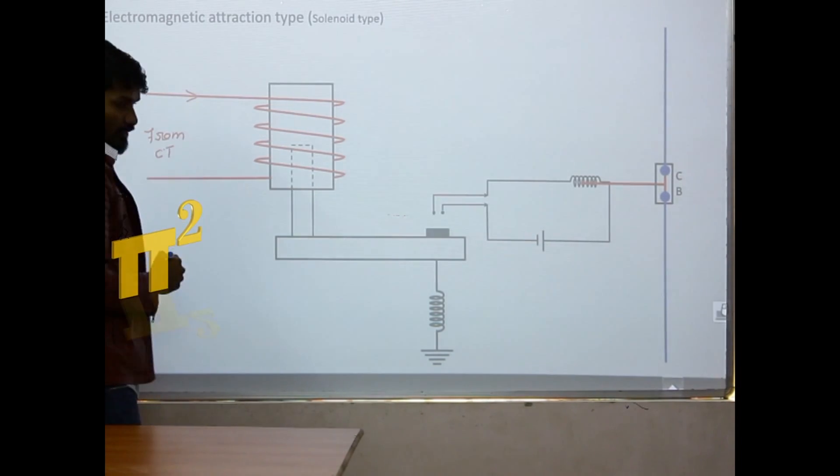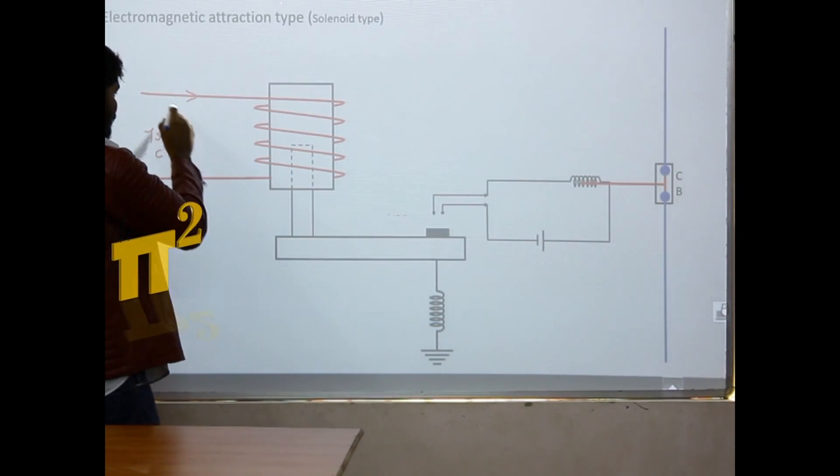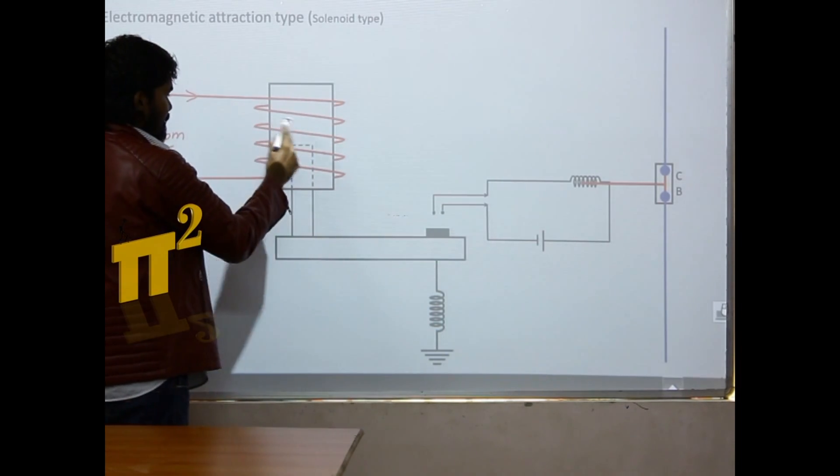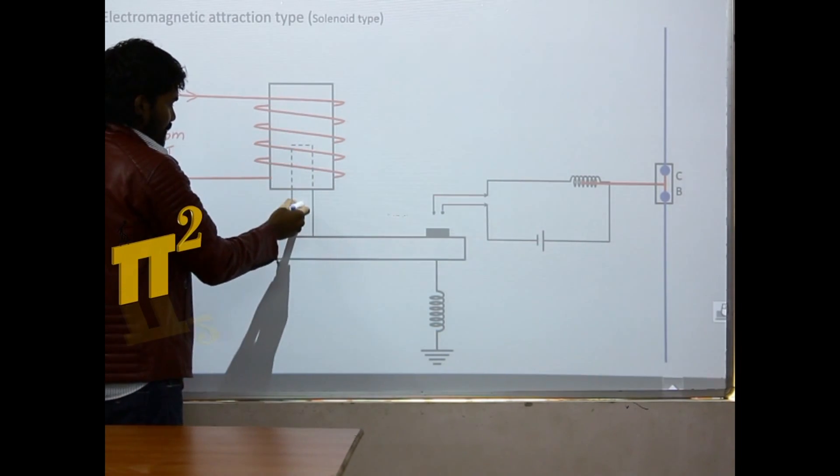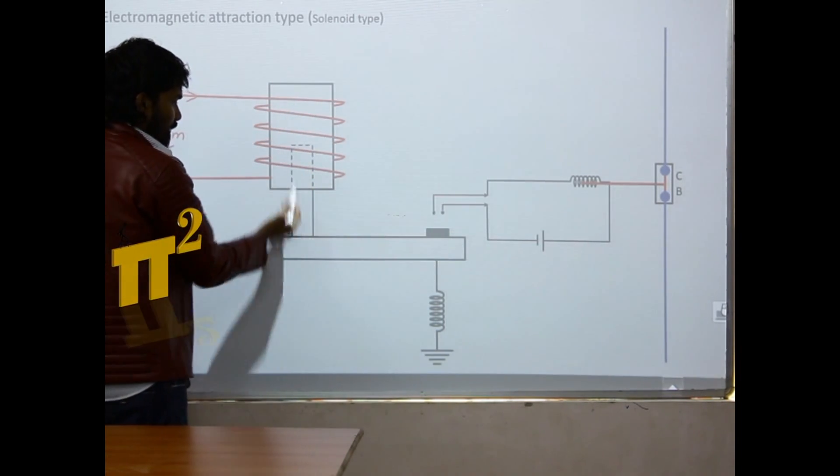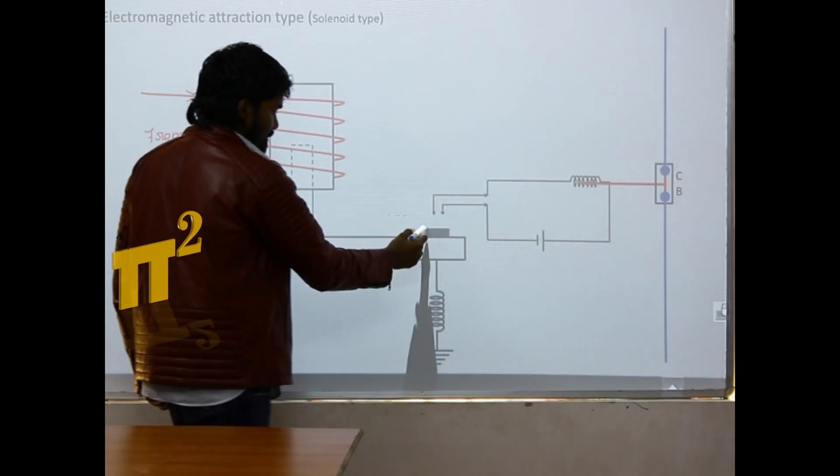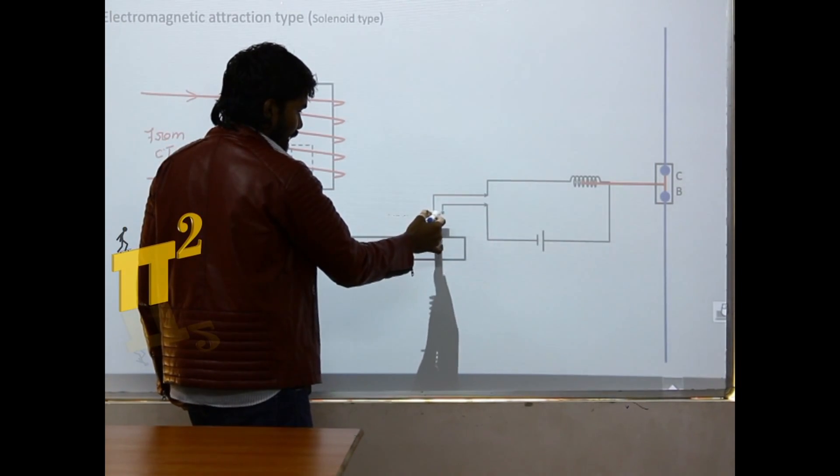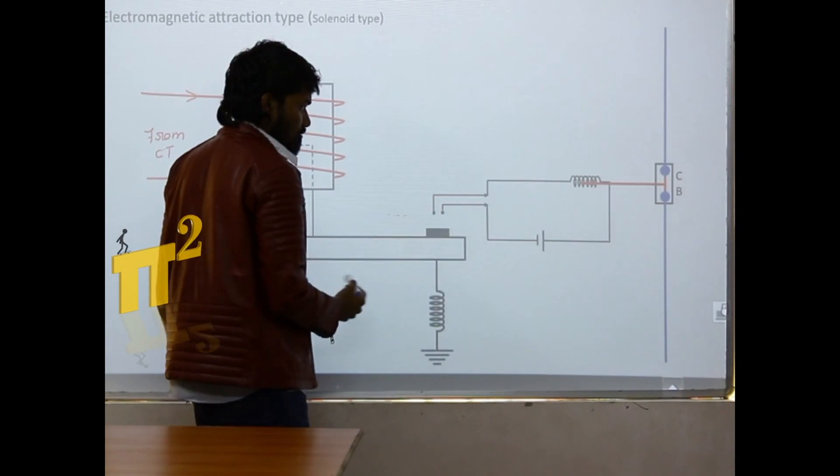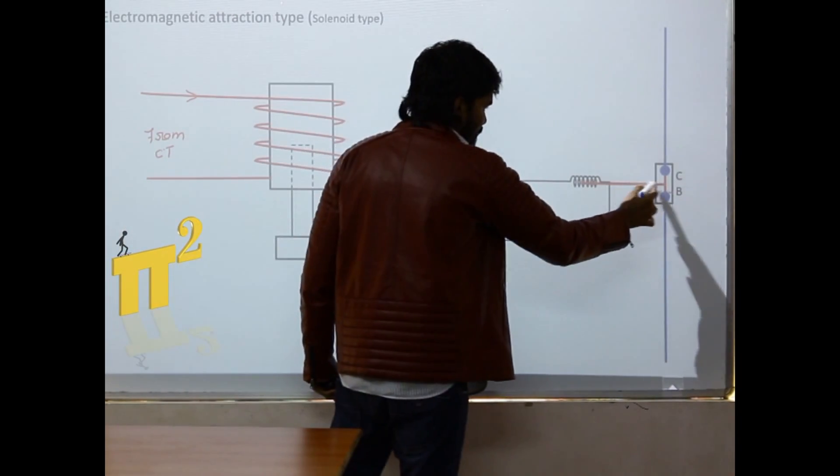When there is a high current, when the current flowing through this is more, this plunger will go into the solenoid. It will have more attraction force. Hence this will go up, we will short these two contacts.